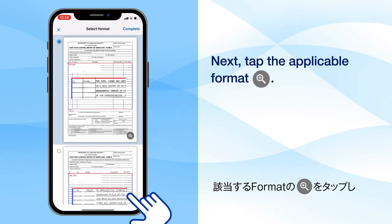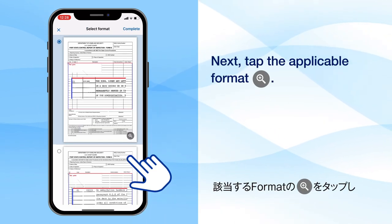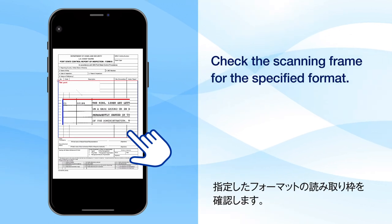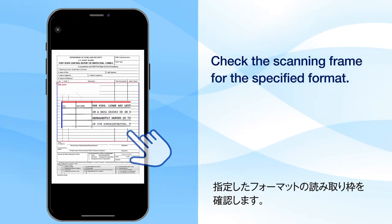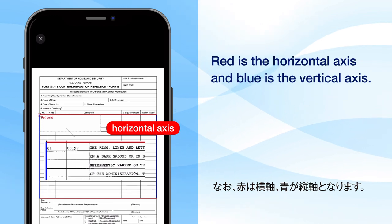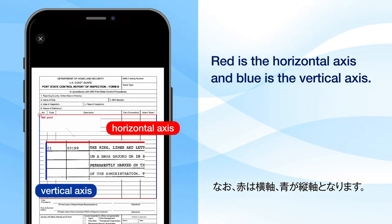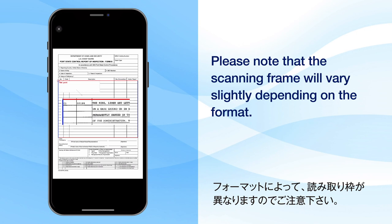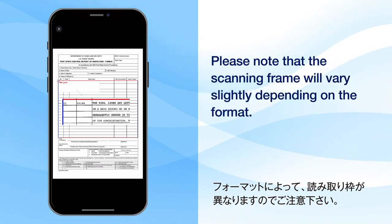Next, tap the applicable format. Check the scanning frame for the specified format. Red is the horizontal axis and blue is the vertical axis. Please note that the scanning frame will vary slightly depending on the format.